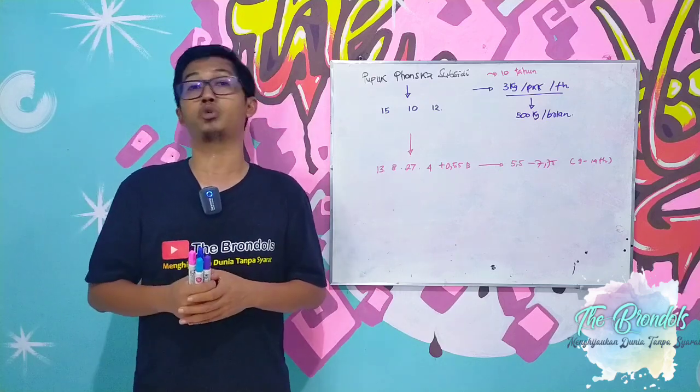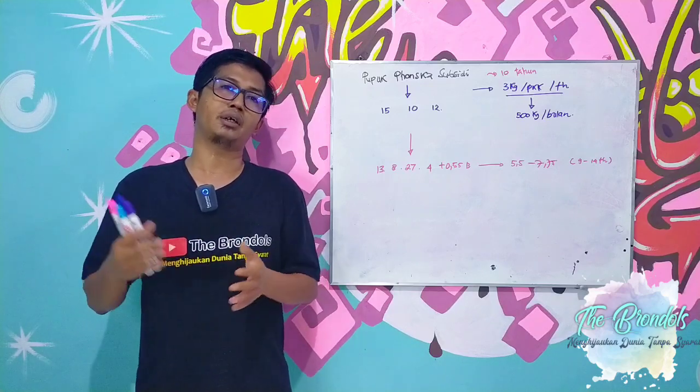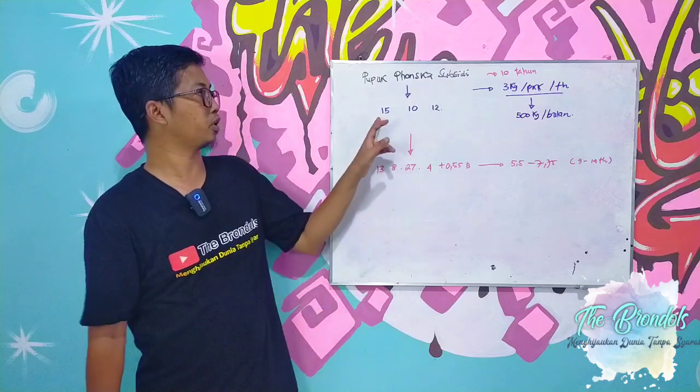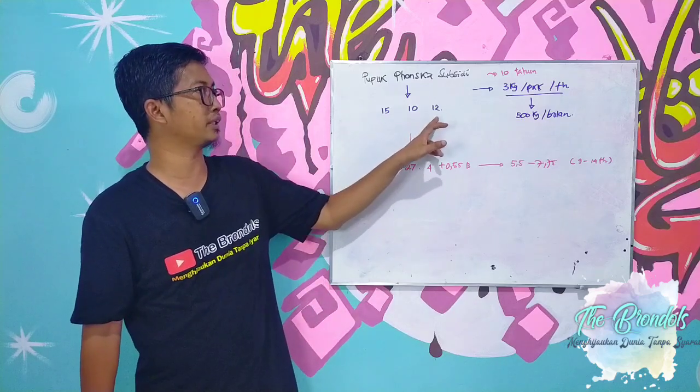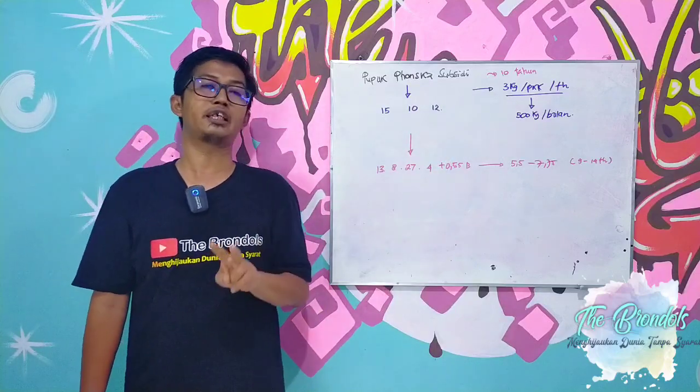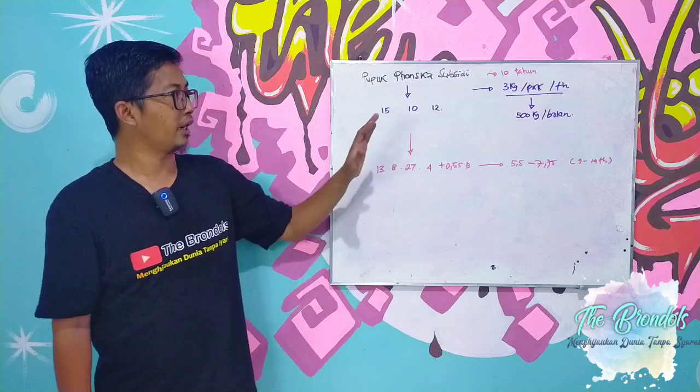Pak Pendi, I have 10-year-old palm oil plants that I fertilize every year twice a year using Ponska subsidized fertilizer 15-10-12, with 3 kilos per tree per year done in two applications, so 1.5 kilos each time. The results are significantly lacking.